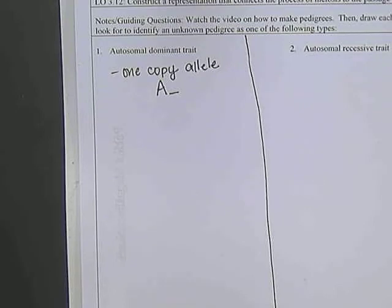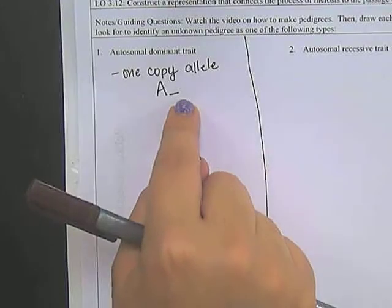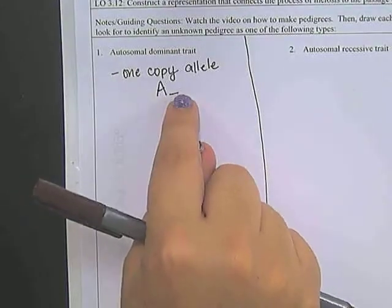So with the autosomal dominant trait, you only need one copy of the allele. So it can be A blank. So either A, big A, big A, or big A, little A.